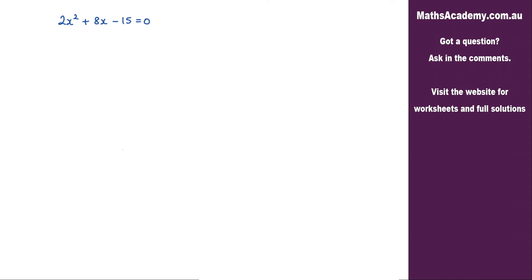In this question we're asked to solve this quadratic equation using completing the square. Now the first step is to eliminate the constant from the left hand side, in other words this negative 15.